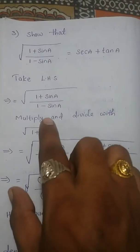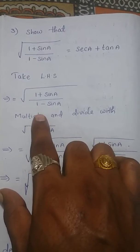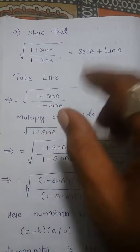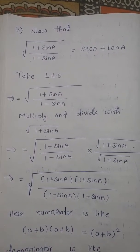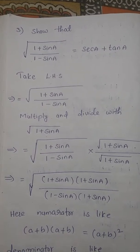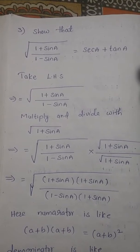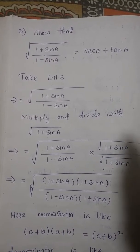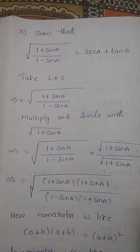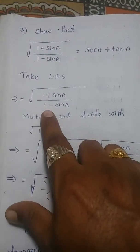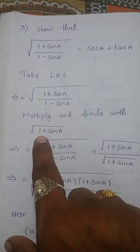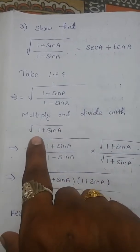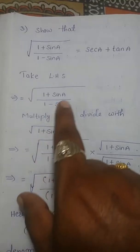The denominator is 1-sinA. The rationalizing factor of 1-sinA is nothing but 1+sinA. For example, the rationalizing factor of (a+b) is (a-b) — just the sign changes, everything else remains the same. So here, the rationalizing factor of 1-sinA is 1+sinA. Multiply and divide with √(1+sinA).